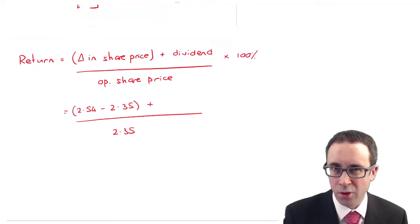It says that the most recent financial statements, a dividend of 15 cents per share was recorded, or 0.15 dollars. So we'll add that in. So 2.54 less 2.35, don't do it in your head, do it on a calculator. 0.19 plus 0.15 divided by 2.35. Does that give me 14.5 percent to the nearest decimal place, to one decimal place?